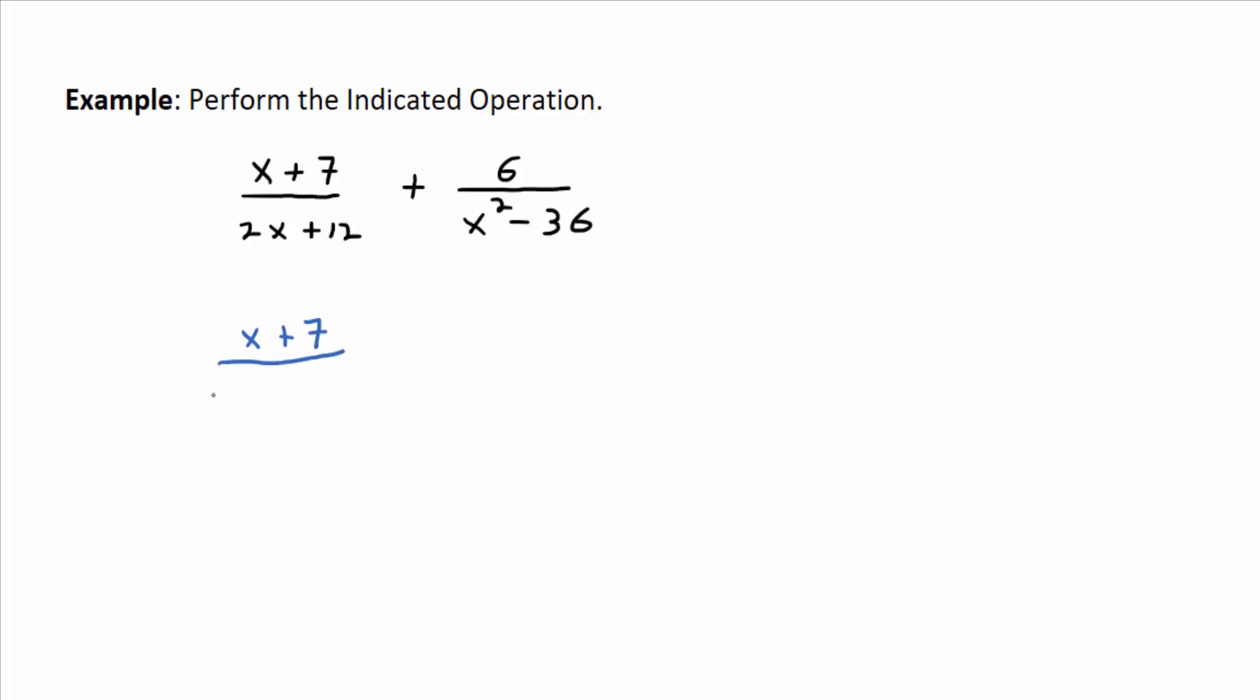The GCF is 2 in that first denominator, and then x plus 6 is left over. And then what about this second denominator? x squared minus 36 factors to be—yep, difference of two squares—x plus 6 times x minus 6.